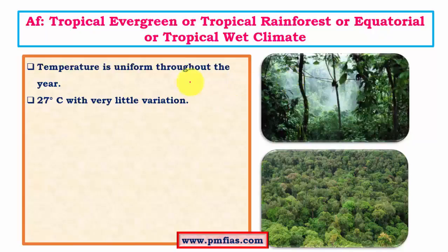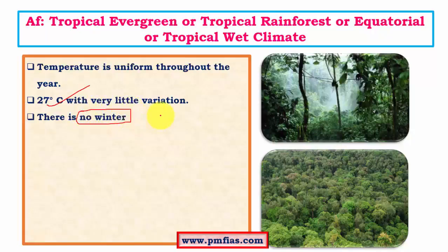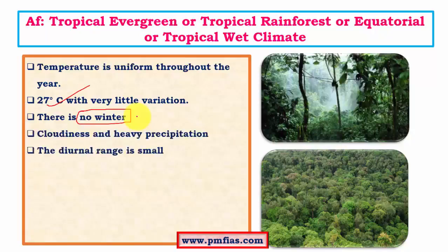The average annual temperature is around 27 degrees Celsius with very little variation. The most important characteristic is there is no winter in this climate. It experiences year-long rainy season with very hot climate and afternoon thunderstorms bringing plentiful rain. Cloudiness and heavy precipitation are the chief characteristics, due to the influence of the ITCZ and trade winds.